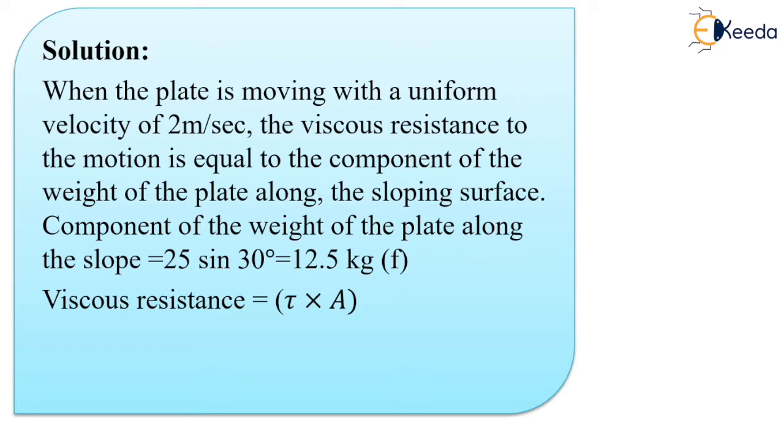Viscous resistance is nothing but the force, so force can be calculated by stress multiplied by area. If we consider stress, our replacement of tau by Newton's law gives us the equation as tau equal to mu dv upon dy. So viscous resistance becomes mu into dv upon dy multiplied by A.